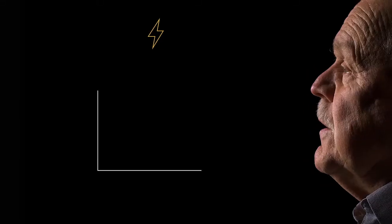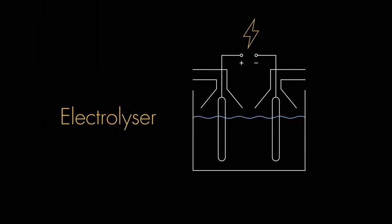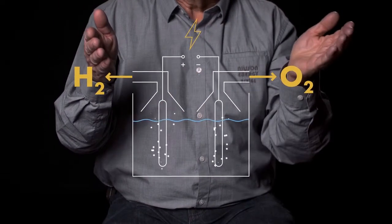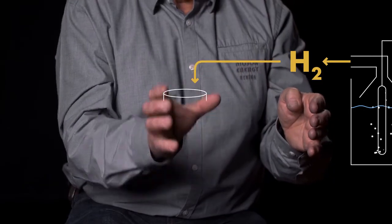To store energy we need a device called an electrolyzer that is splitting water into hydrogen and oxygen. Hydrogen is the energy carrier and that is stored in a cylinder.